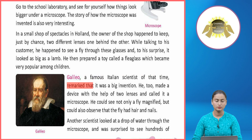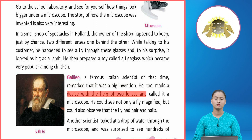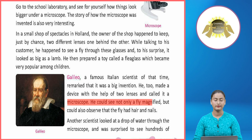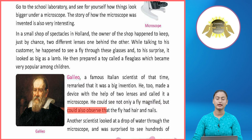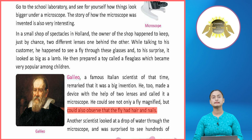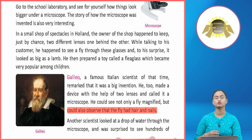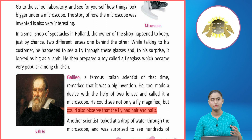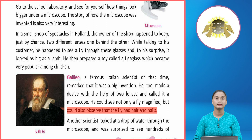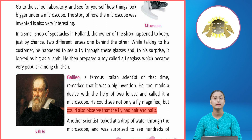Galileo, a famous Italian scientist of that time, remarked that it was a big invention. He too made a device with the help of two lenses and called it a microscope. He could see not only a fly magnified but could also observe that the fly had hair and nails. Galileo used two lenses and could not only see the fly but also observe that a fly has nails and hair.